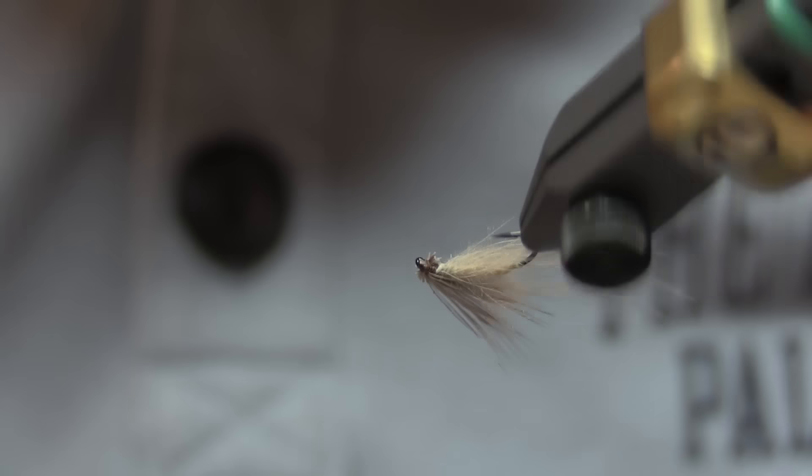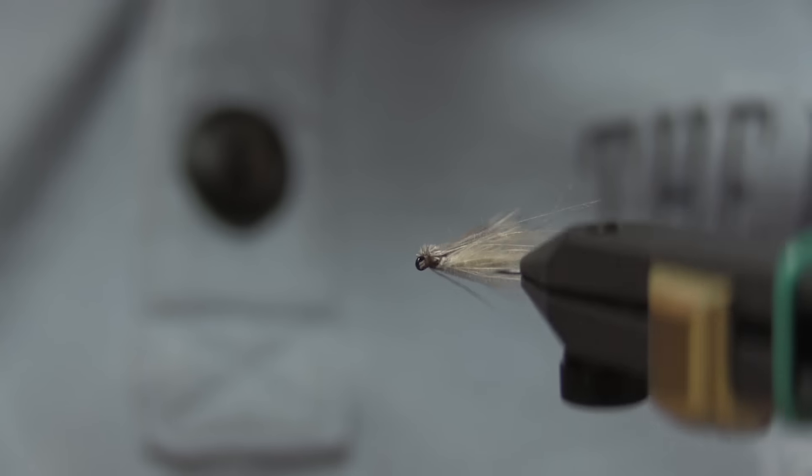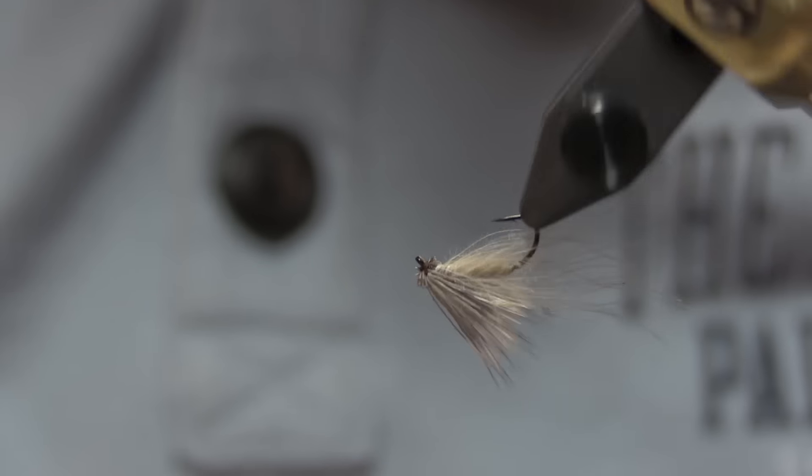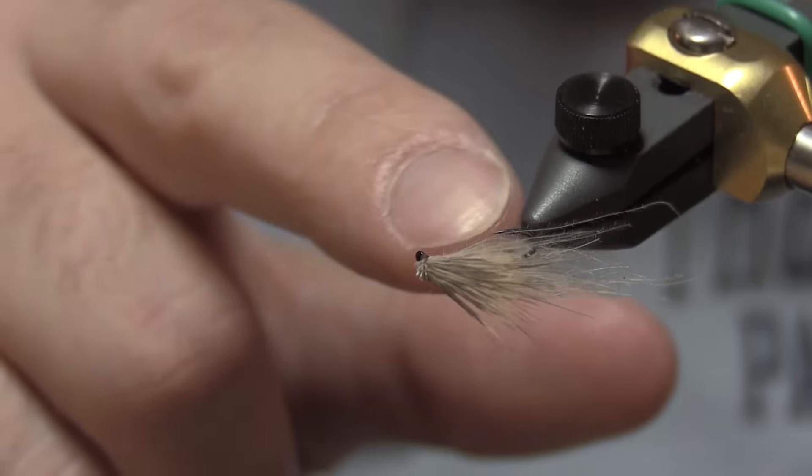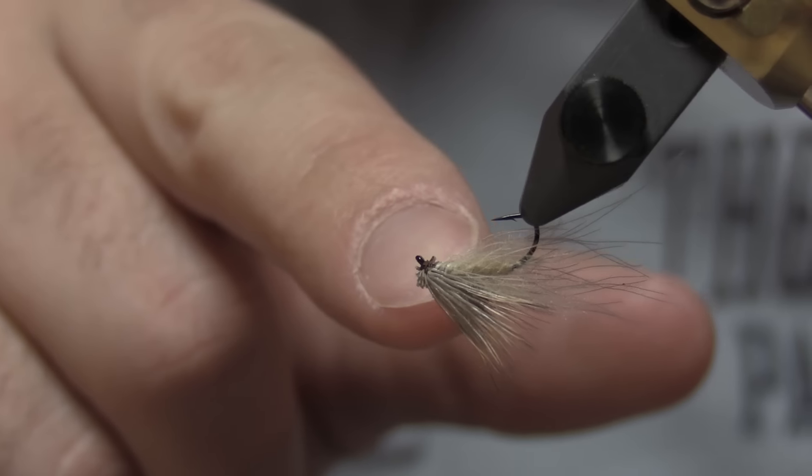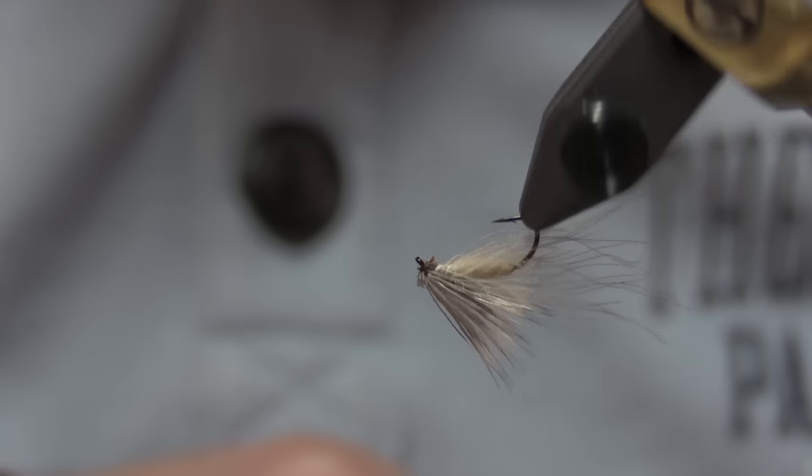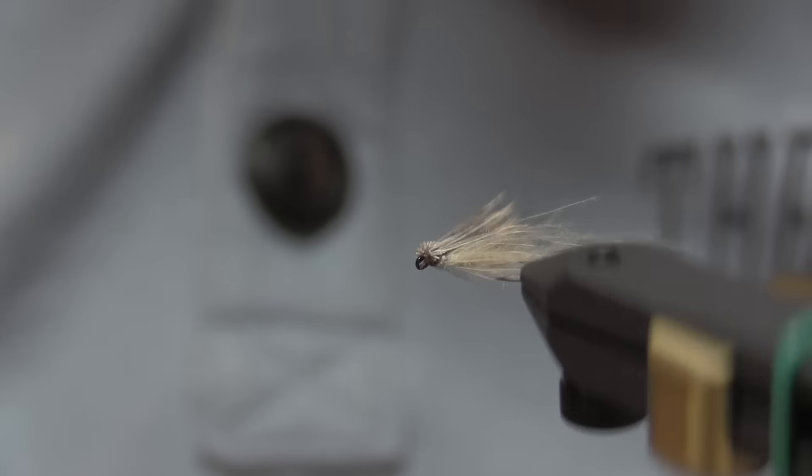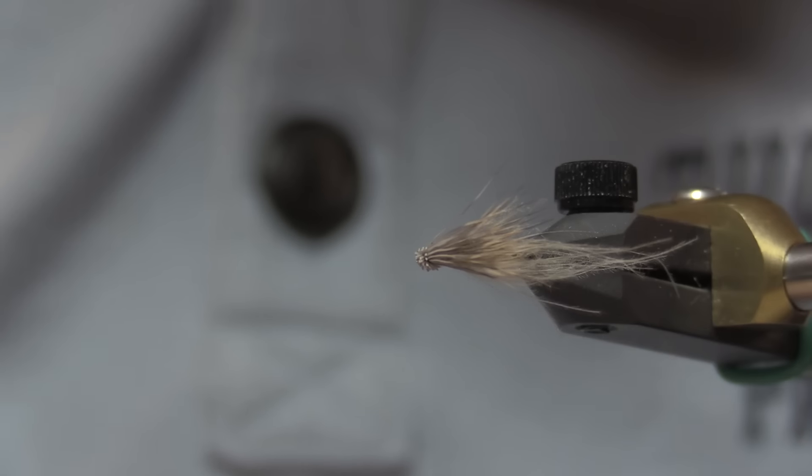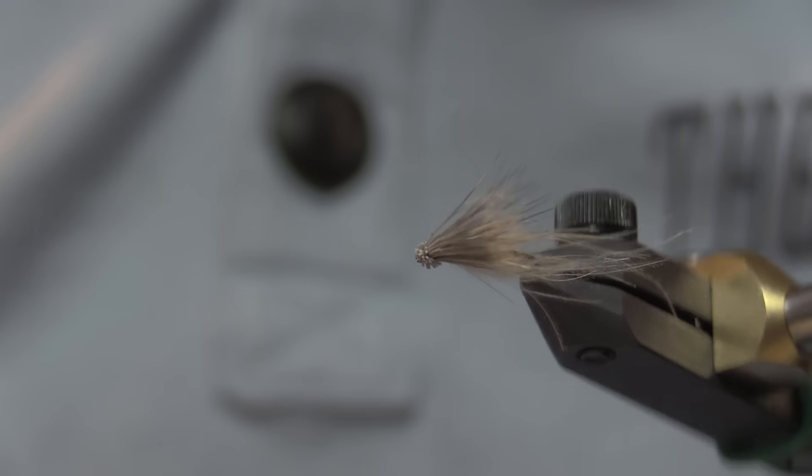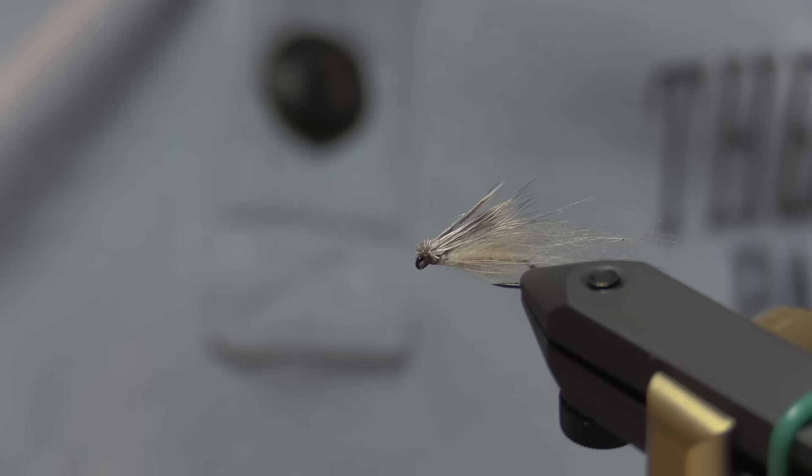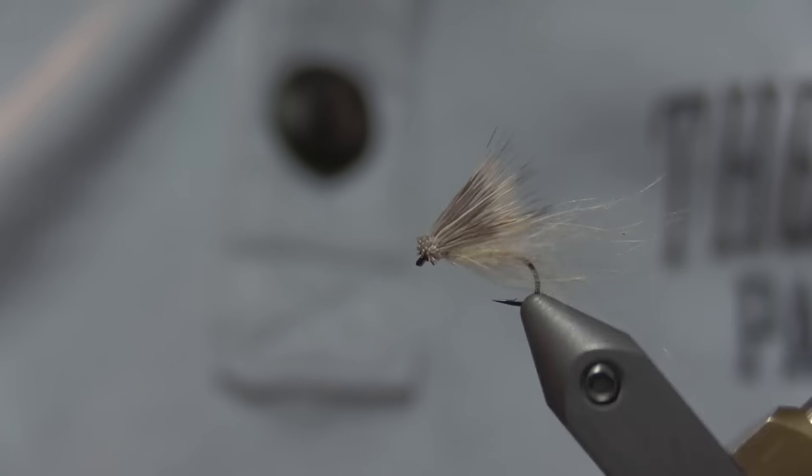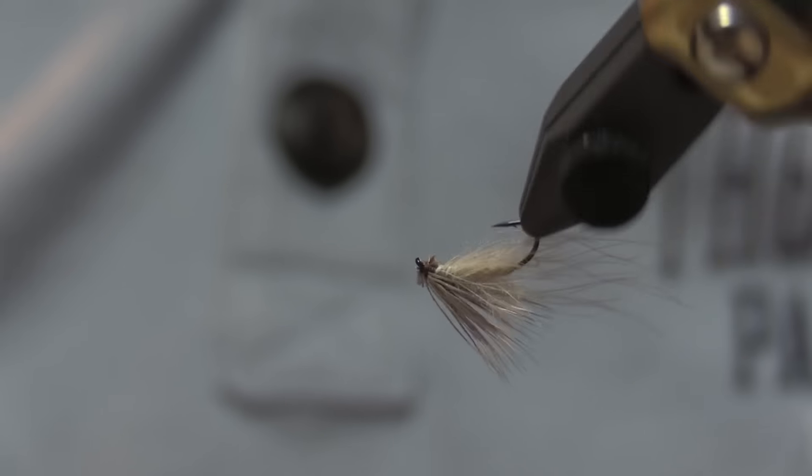You know, when I first saw this I was like, oh, the fibers are a little long, but you want that, because it really gives it that appearance of a gas bubble in my opinion. And if you look closer, you can see that it looks like a dubbed body. It's all just that CDC feather wrapped around it. It floats very well, and I've caught lots of nice browns on this fly in caddis hatches, where caddis and mayflies are both hatching. They've preferred this because again, I think it looks like an emerger, so it's like putting an emerging caddis on.